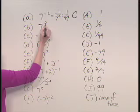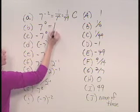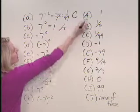For the second one, 7 raised to the 0 power, recall that anything raised to the 0 power is 1, so that would be selection a.